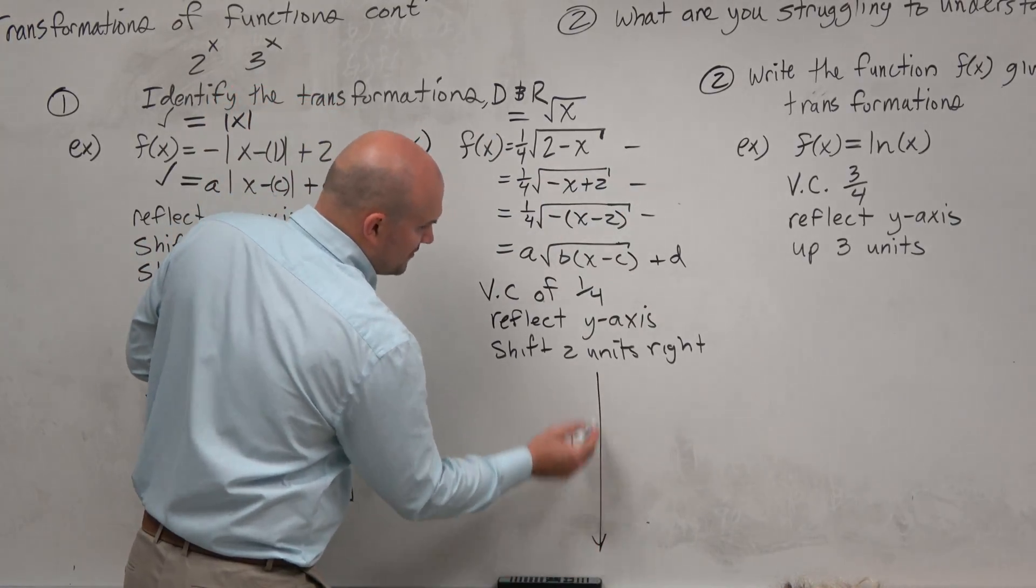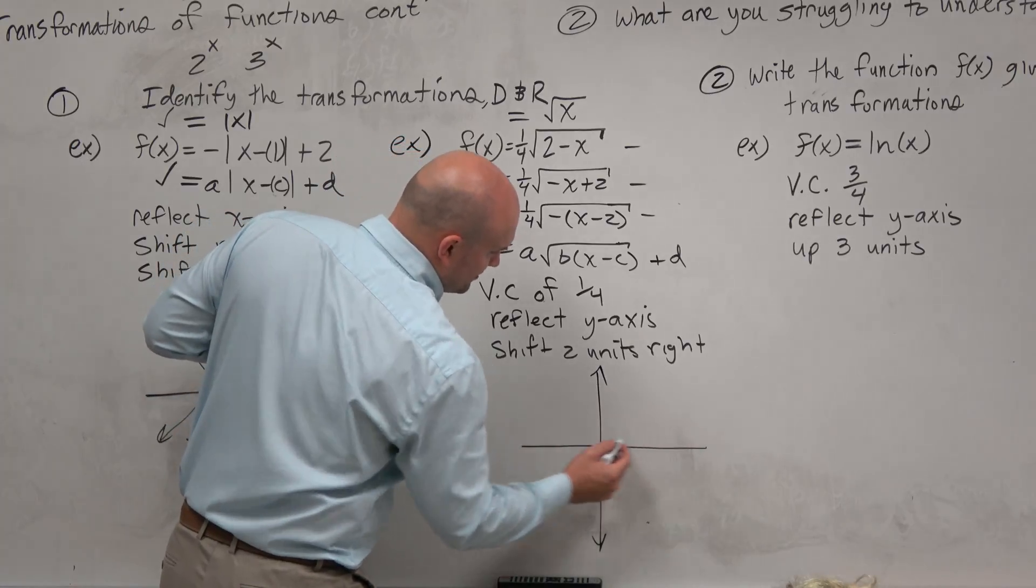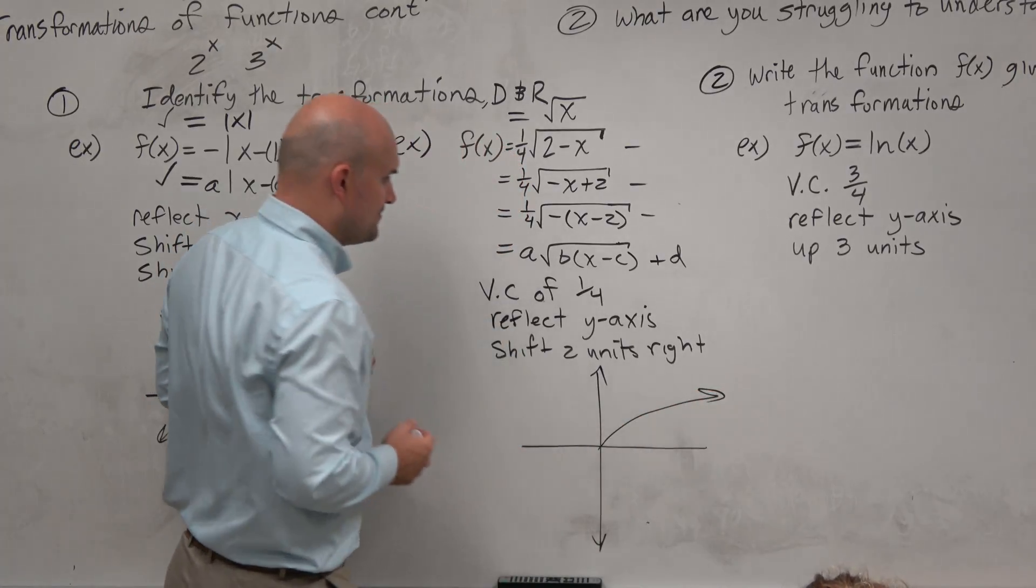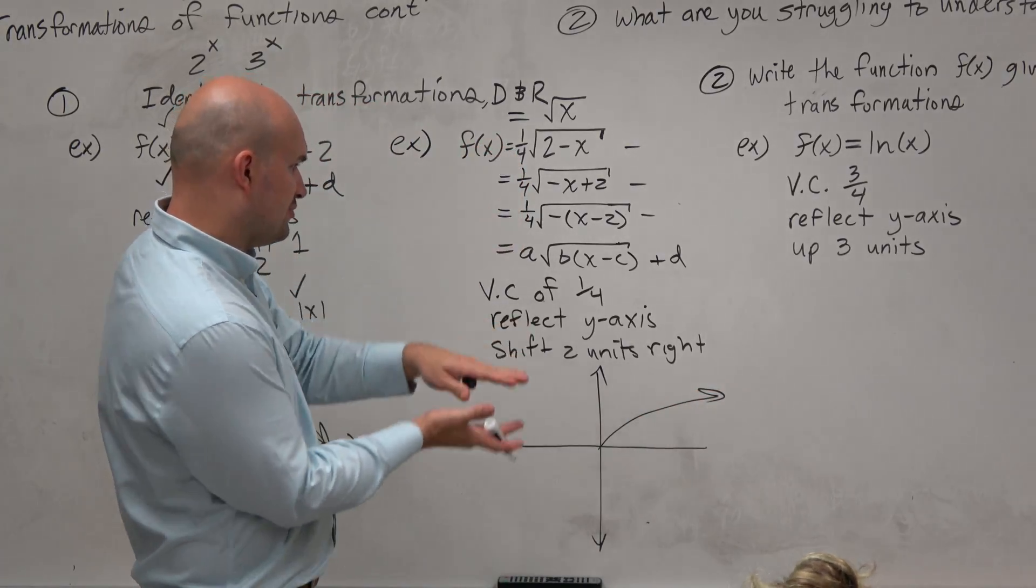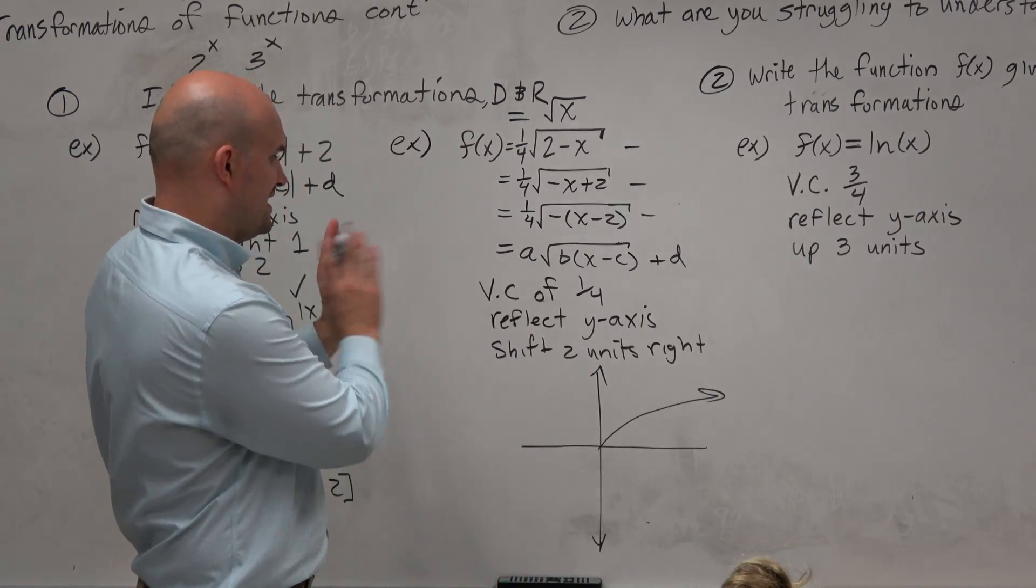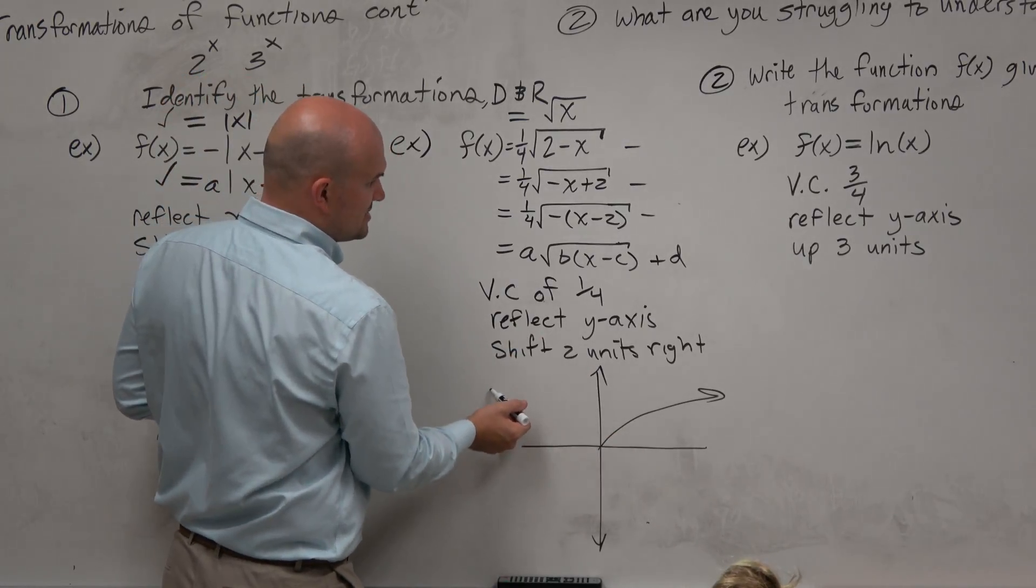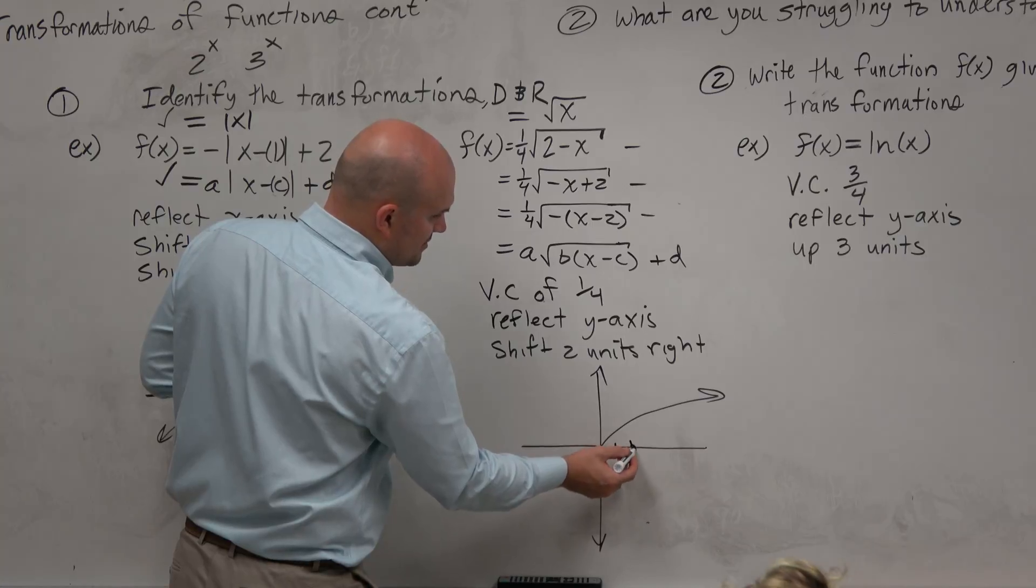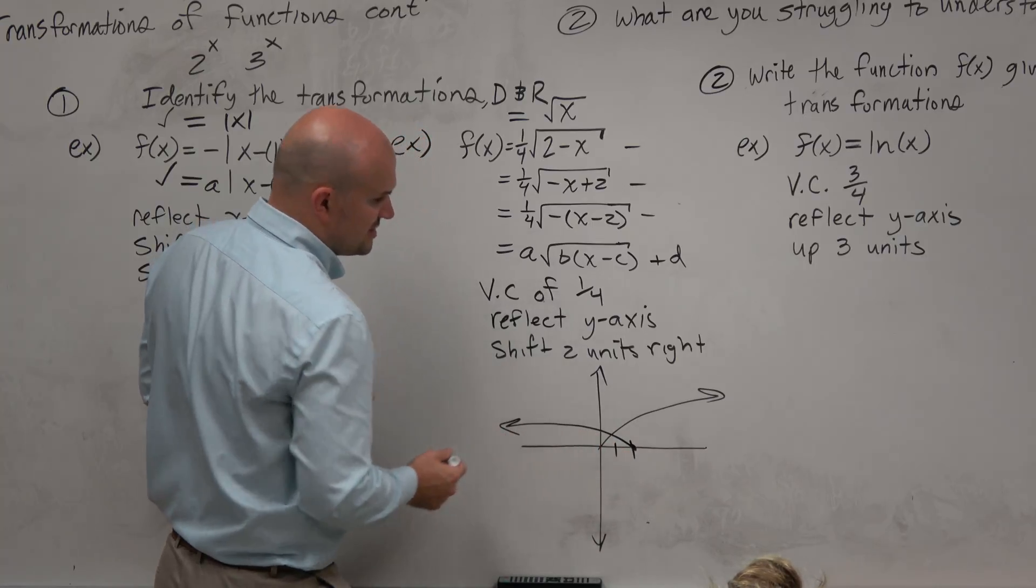So we know what the parent graph of square root of x looks like, at least hopefully. I mean, that's what we did last class period. And you can see it's being compressed. It's being reflected. So we have it reflected about the y-axis and then shifted 2 units to the right. And it's being compressed, so it's kind of pushed down.